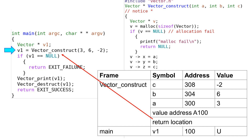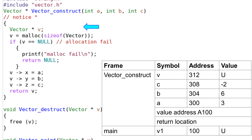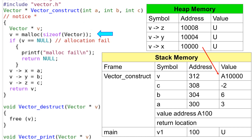Let's see what happens inside the construct function. The function has a local variable called v, stored in the stack. At this moment, the value of v is unknown and is marked u in the stack memory. The next line uses malloc to allocate memory in the heap. Since a vector object has 3 integers, 12 bytes will be allocated. Suppose the starting address is 10,000. The address is stored in v. The values in the heap memory are not initialized yet, so the values at addresses 10,000, 10,004, and 10,008 are all marked u, meaning unknown. Since v is a pointer, we use arrows for the attributes x, y, and z. The values are assigned to 3, 6, and minus 2 respectively.